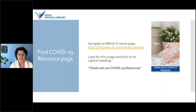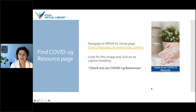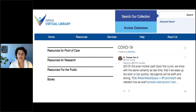To find the COVID-19 resource page, navigate to our home page — the URL will be sent out so you'll have it handy. I recommend you bookmark it or add a shortcut on your desktop for easy access. On the home page, look for the image on the right-hand side and click on the heading 'Check out our COVID-19 resources,' which takes you to a page with headings for Point of Care, Research, Public, and Books.